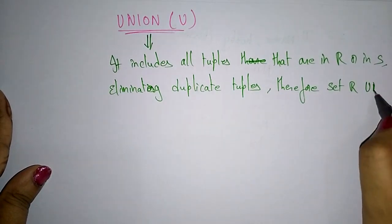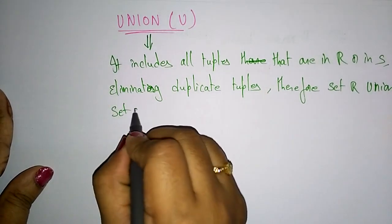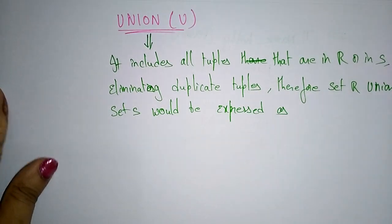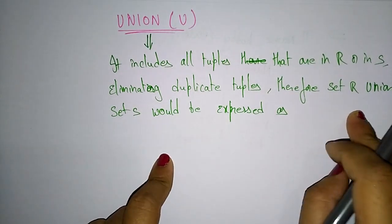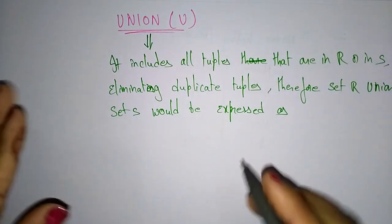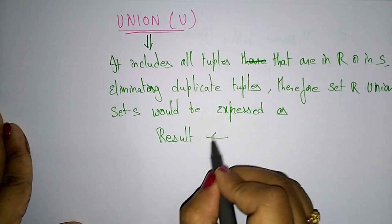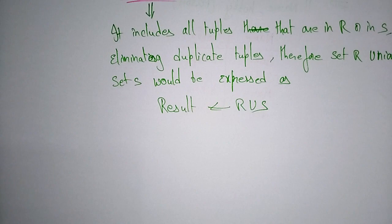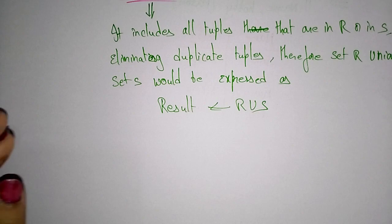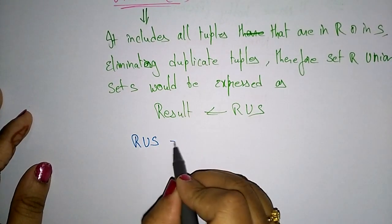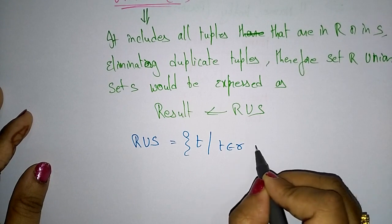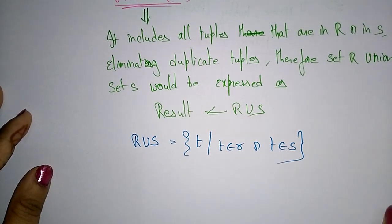So the set R union set S would be expressed as: the result is R union S. R is one relation and S is another relation. It combines the tuples present in R and S by eliminating duplicate rows. This can also be expressed as: R union S equals the set of tuples T such that T belongs to R or T belongs to S.